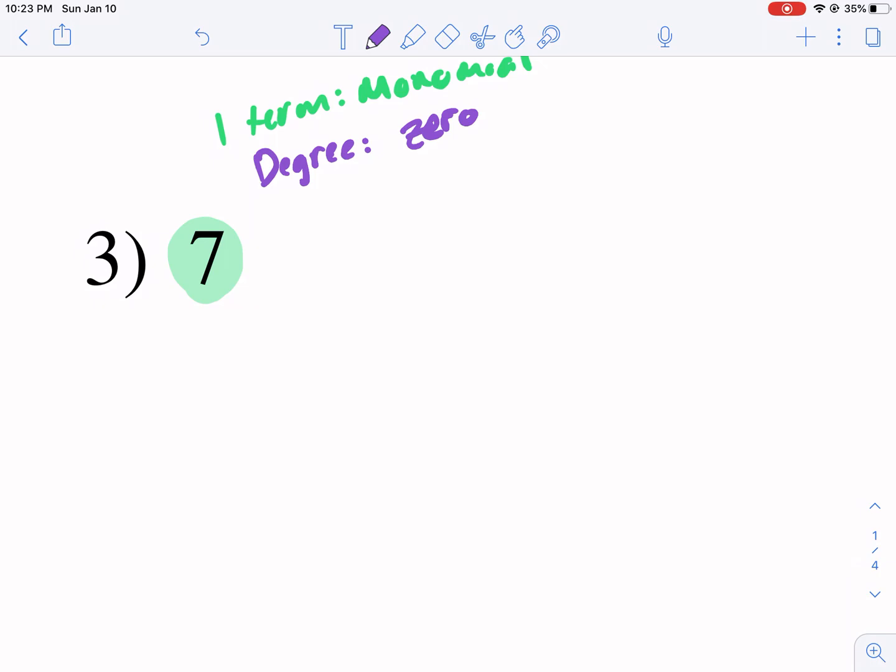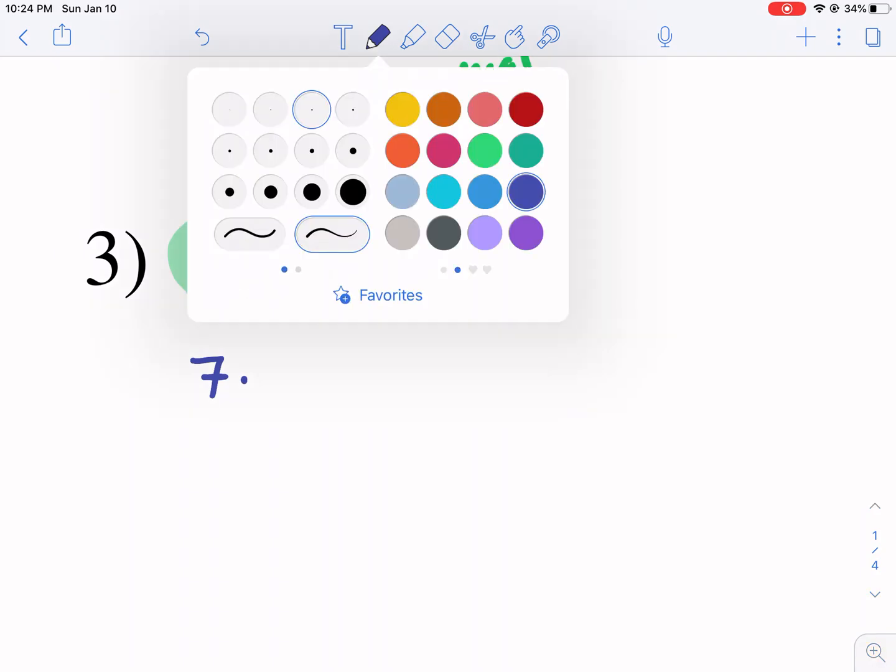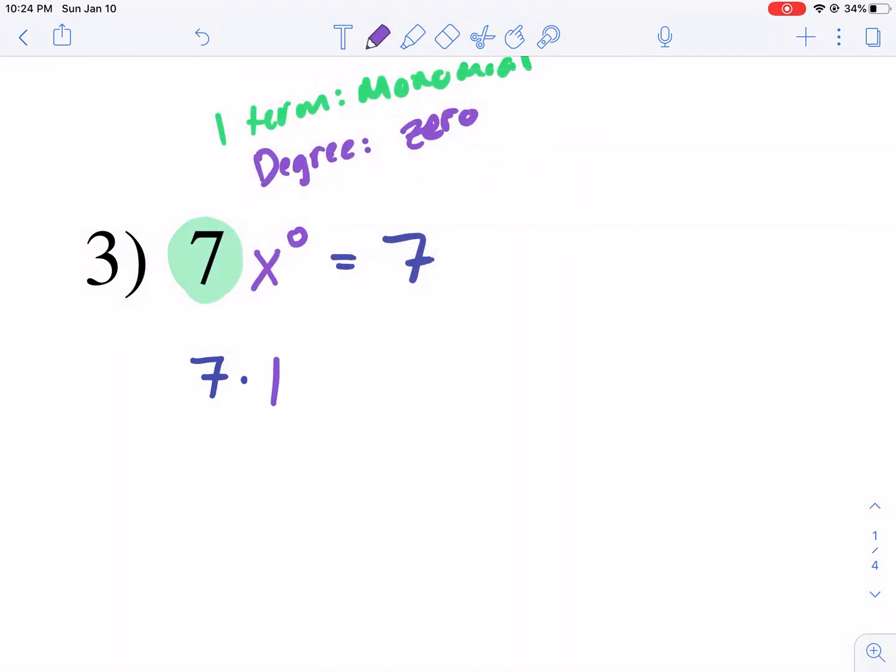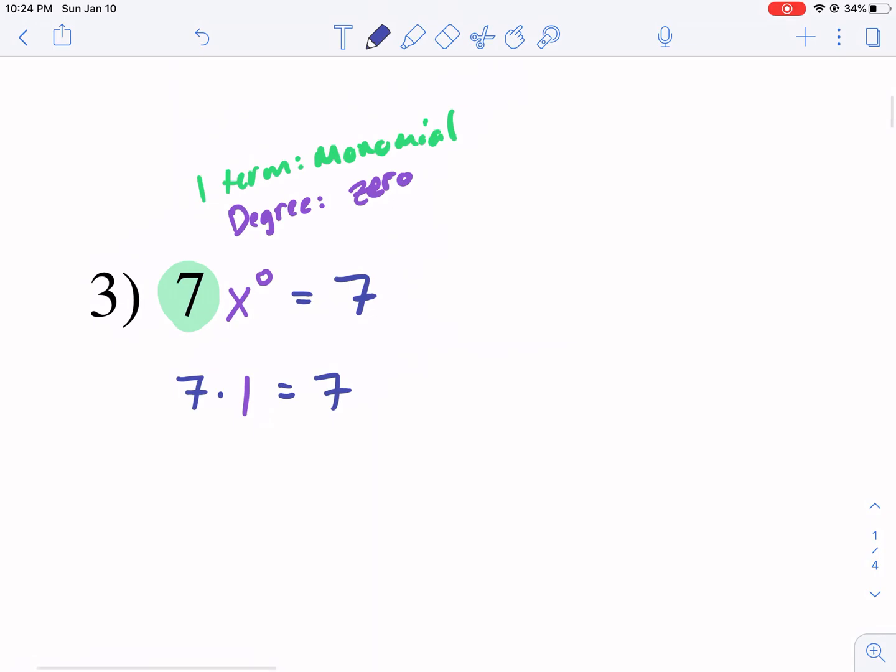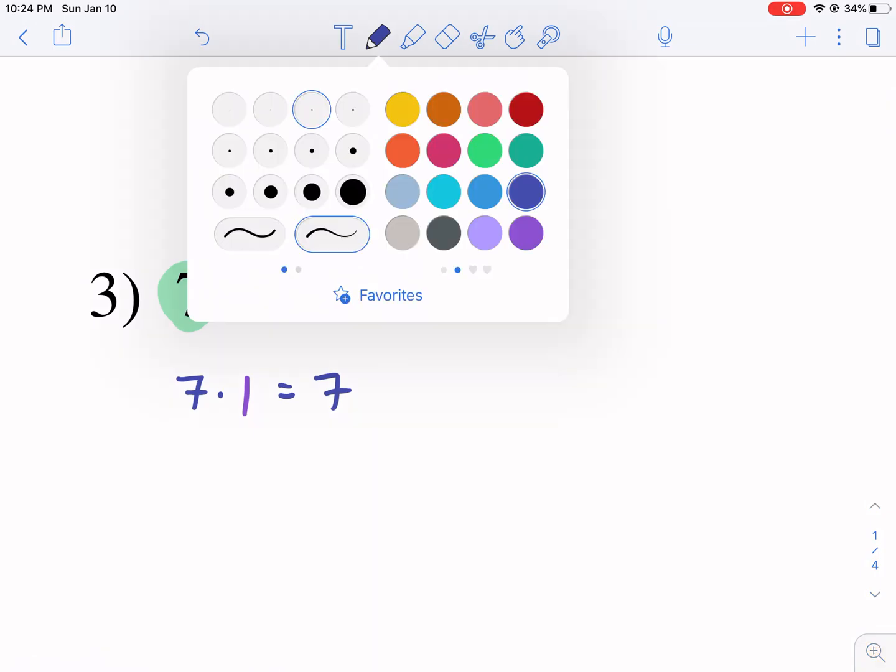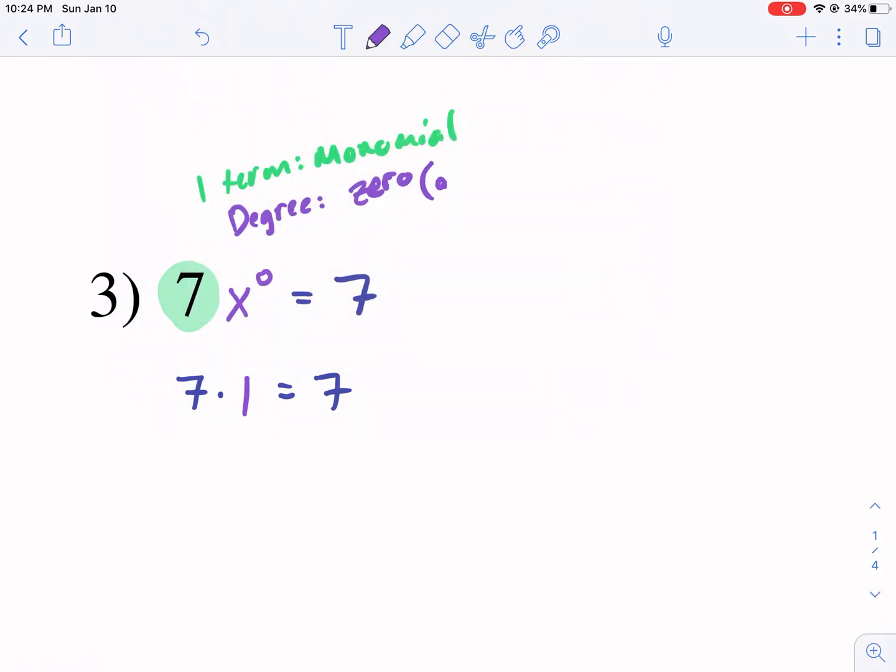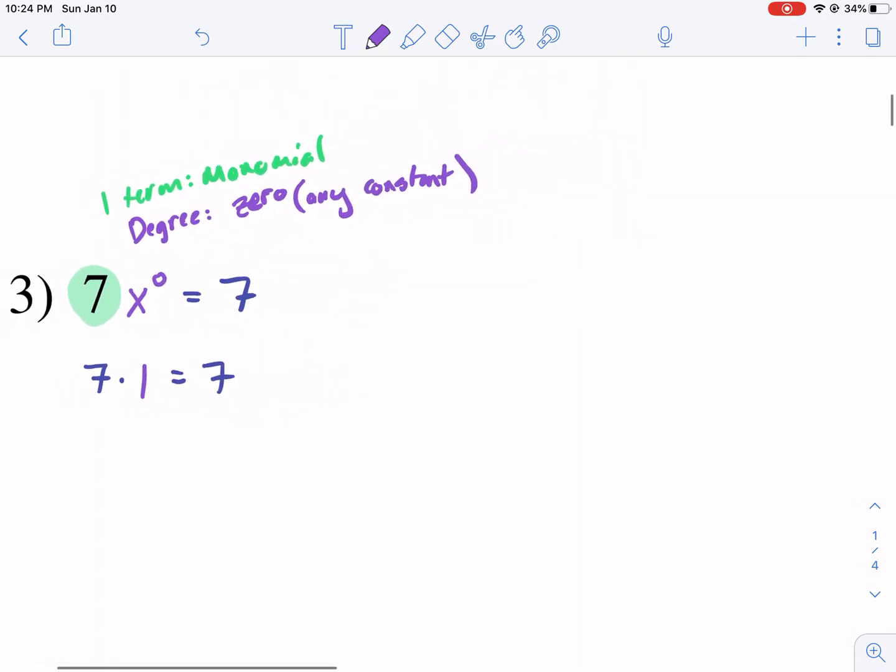The degree of this one is actually going to be a zero degree polynomial. How is that so? I could write here x to the zero power. And that would be equivalent to seven. So seven times x to the zero power is the same as seven, because x to the zero power is just one. So any constant will always be a zero degree polynomial if it's by itself.